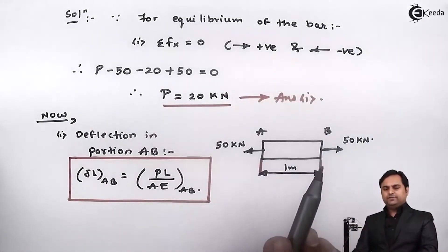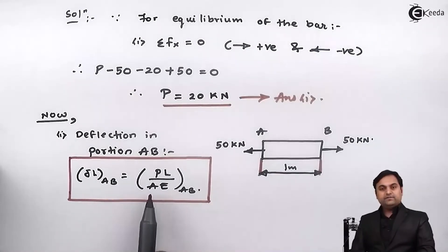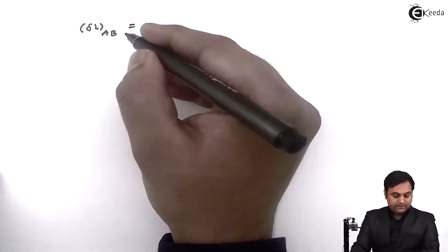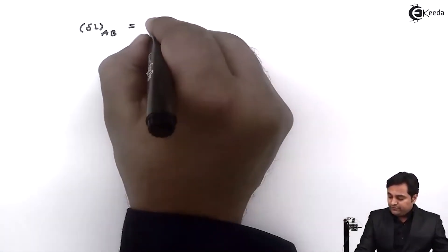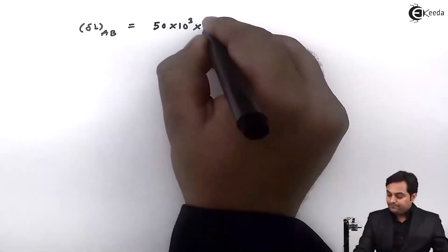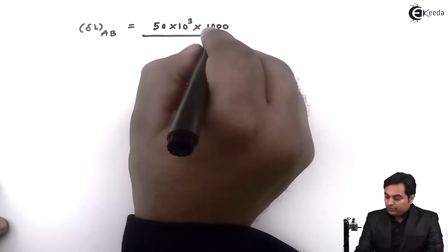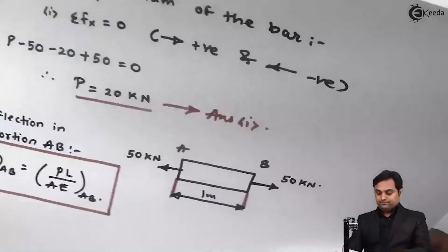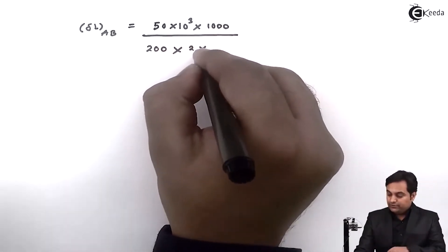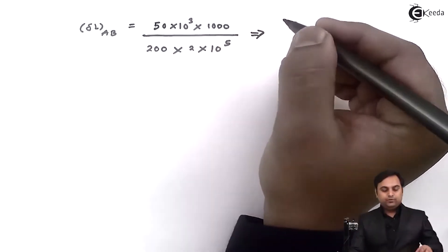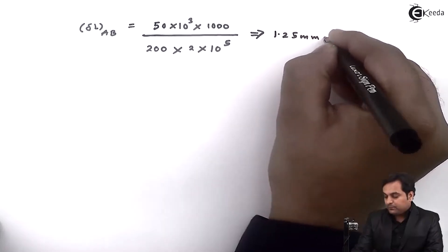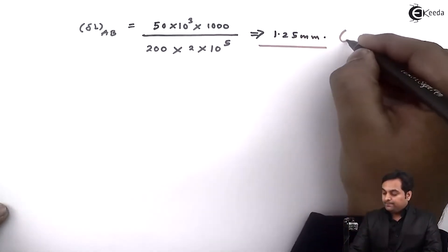The load is tensile so it is taken as positive. Substituting values: P = 50×10³ N, L = 1000 mm, A = 200 mm², E = 2×10⁵ N/mm². Therefore deflection in AB = (50×10³ × 1000) / (200 × 2×10⁵) = 1.25 mm. The positive answer means there is an increase in length of the bar.